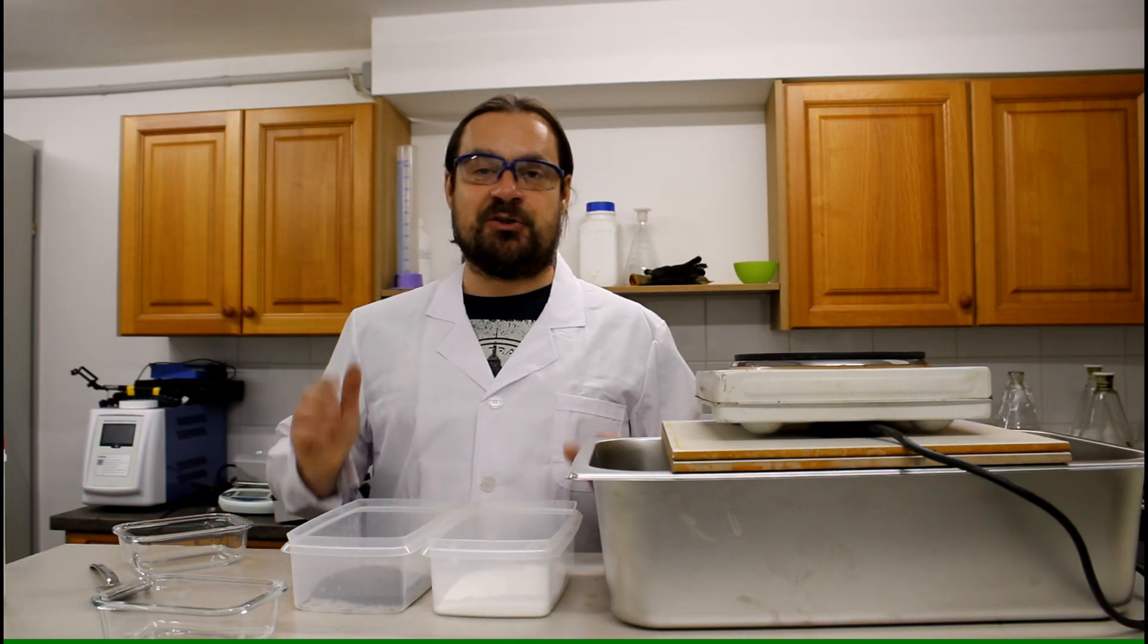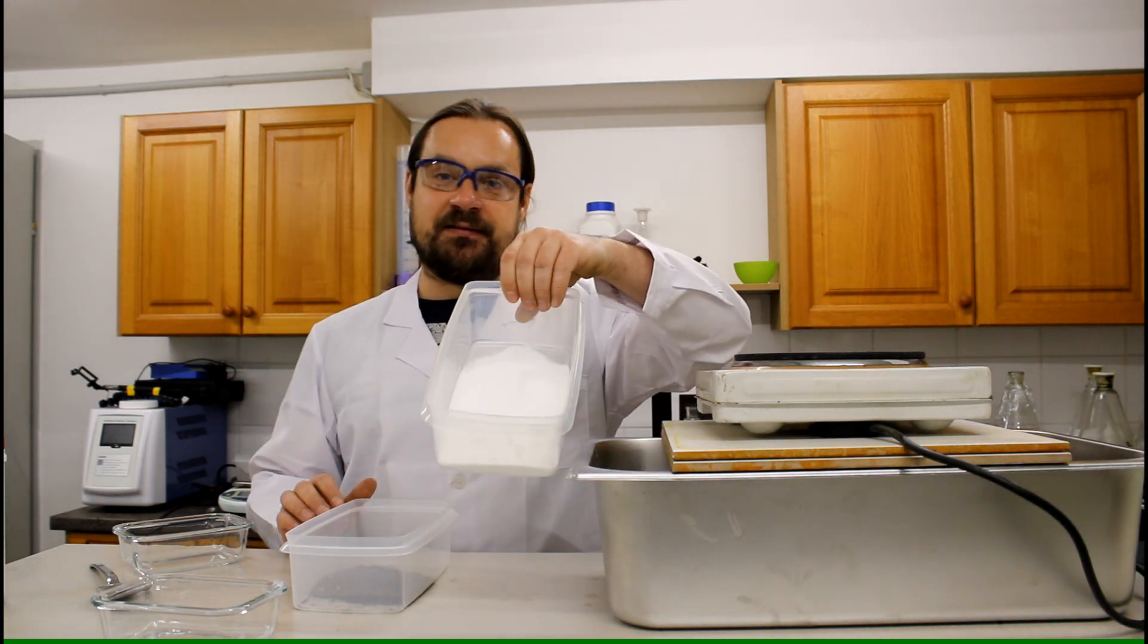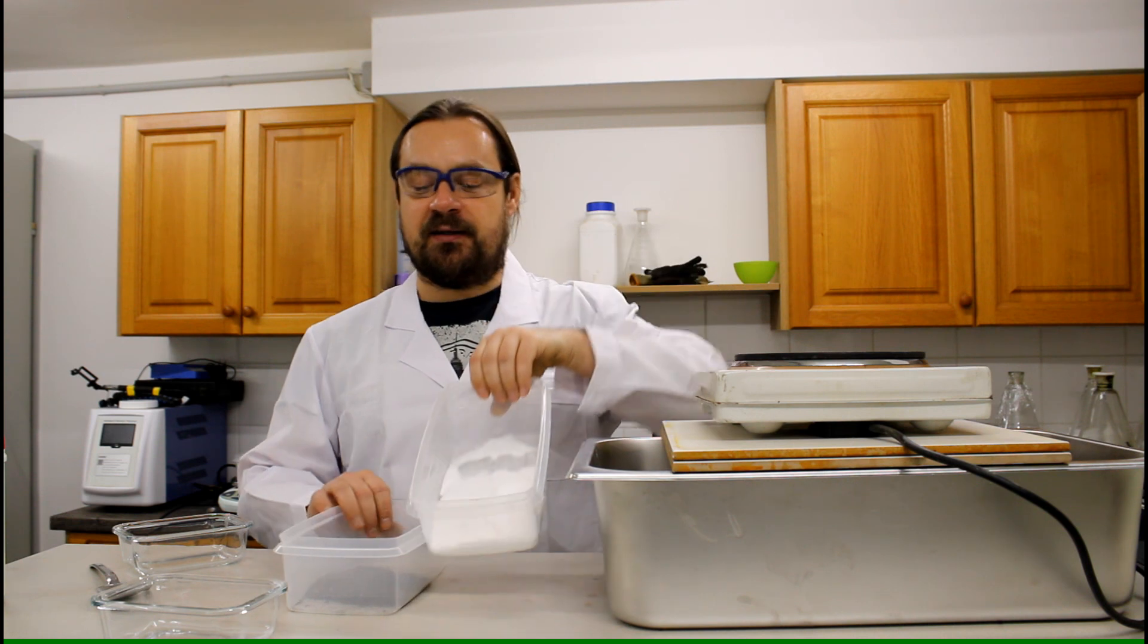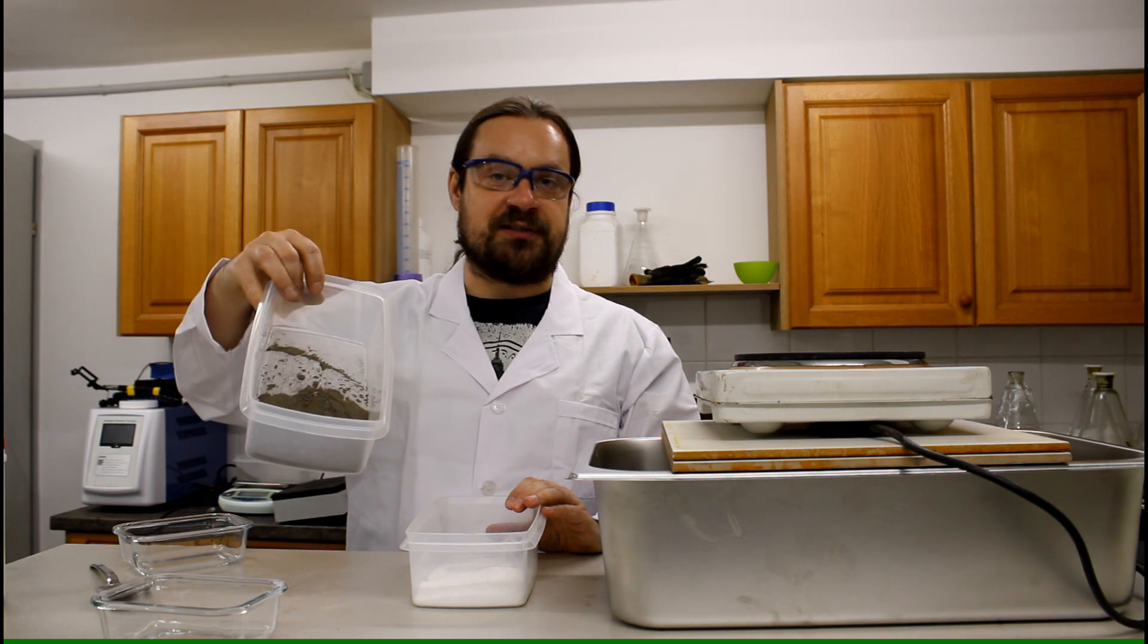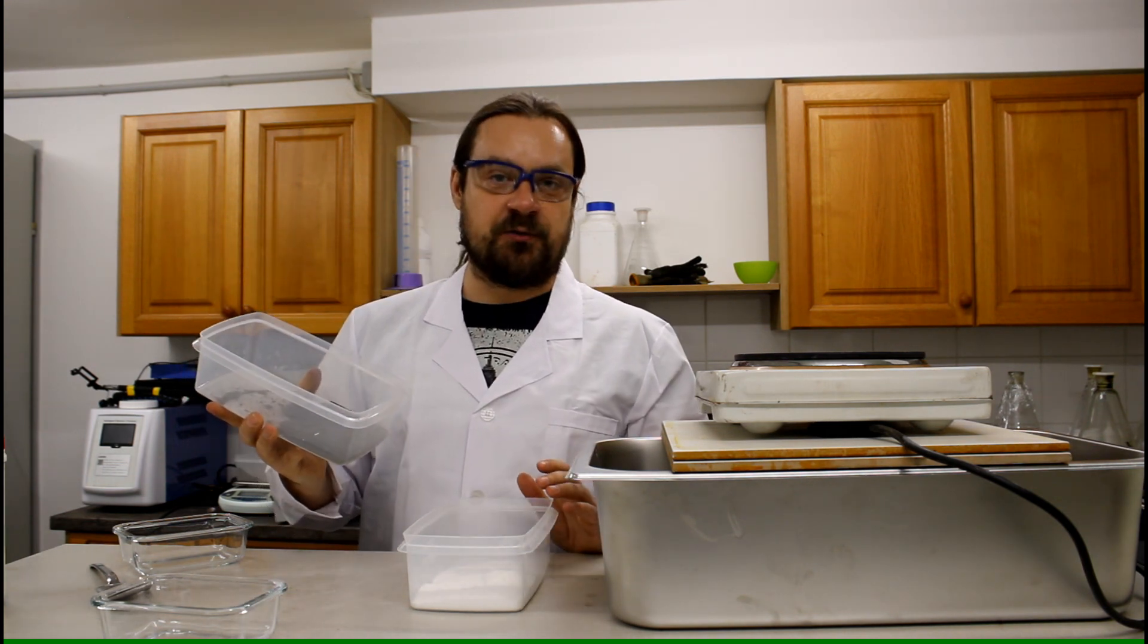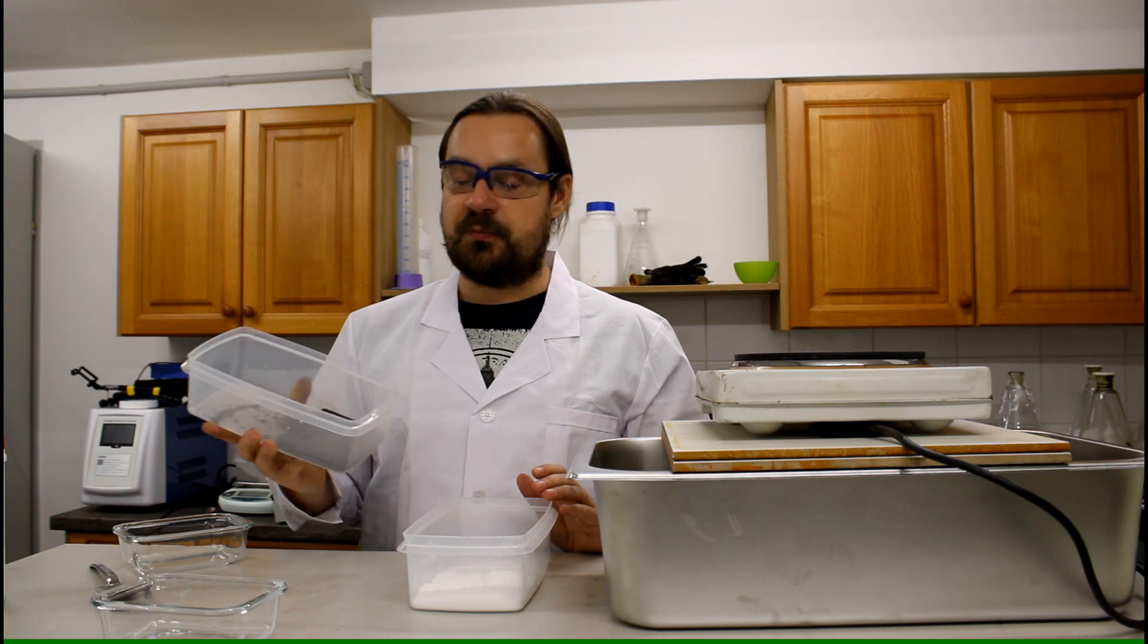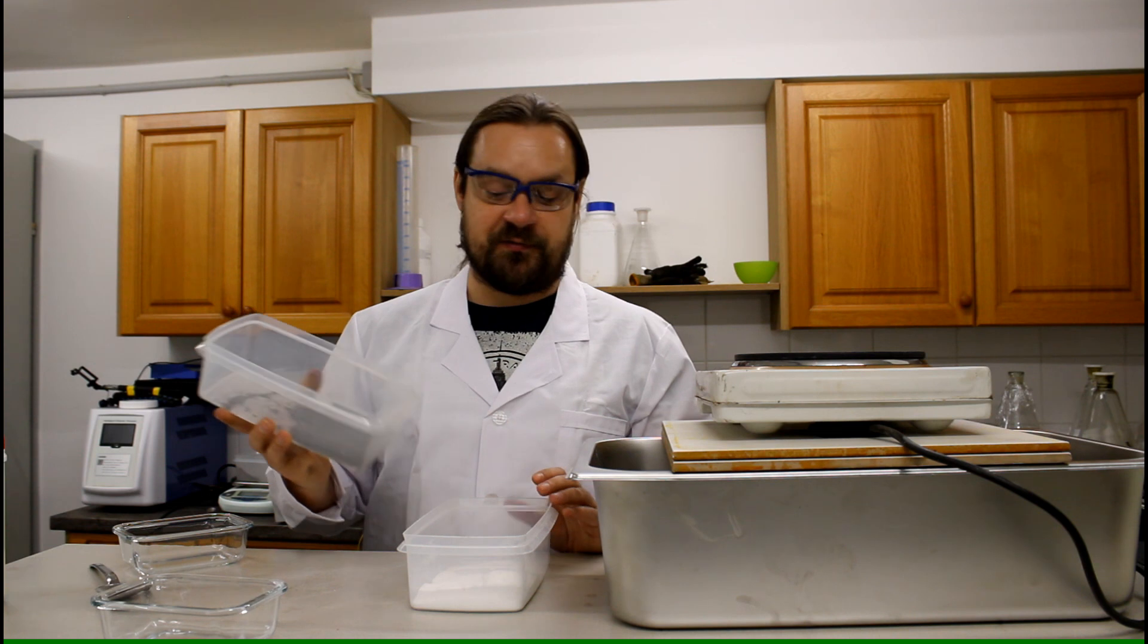The next step is really simple. I have here prepared 100 grams of ammonium chloride and 50 grams of mineral powder that I want to extract. The idea is just to pour it together, mix it thoroughly, and put it in the confined space—the two pyrex dishes—on the hot plate. That's what we're going to do now.